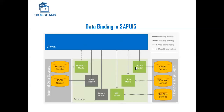This was the overview of data binding in SAP UI5. Now let's implement the JSON model in actual application development. Let me open my Business Application Studio.